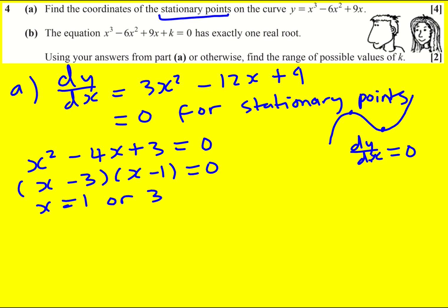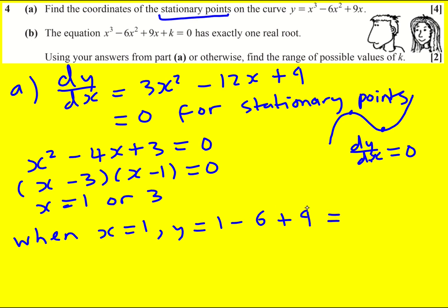The question asks for the coordinates, so we need to find the values of y. When x equals 1, y is equal to — substituting back in — 1 cubed, which is 1, minus 6 times 1 squared, which is minus 6, plus 9. That gives me 4. So I can write it as (1, 4).